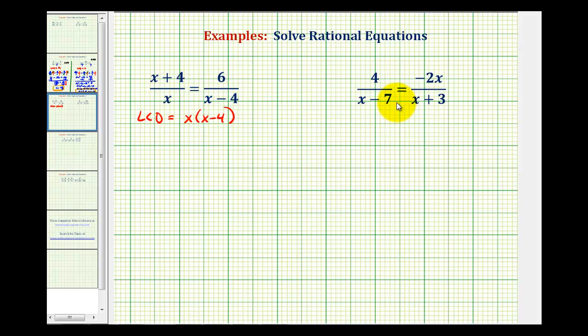But these two examples are special cases. Since we have one fraction equal to another fraction, we could take a shortcut and cross multiply, meaning the quantity x plus 4 times the quantity x minus 4 must equal 6 times x.